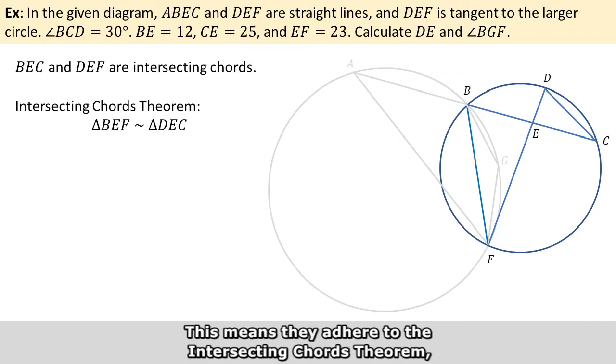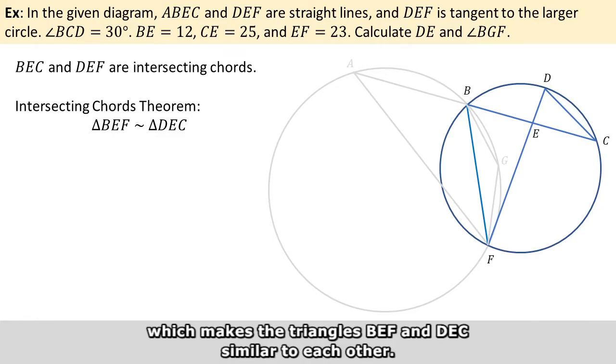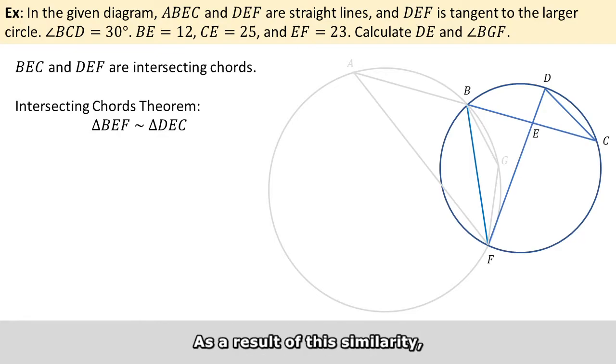This means they adhere to the intersecting chords theorem, which makes the triangle BEF and the triangle DEC similar to each other. As a result of this similarity, angle BEF and DEC are the same.